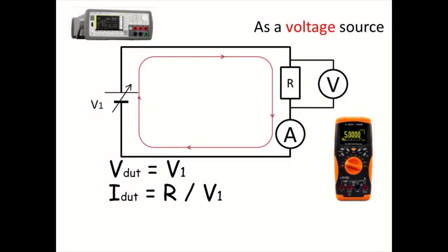First of all, let's think about how to increase the output current of a voltage source. When the power supply is set as a voltage source, its equivalent circuit is like this.